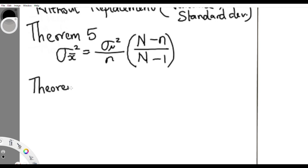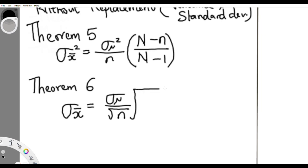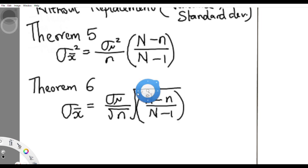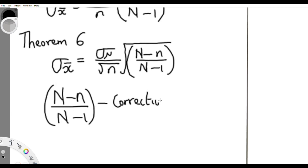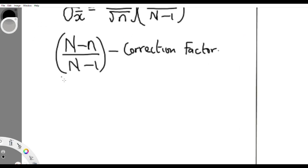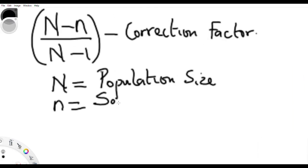The same thing applies for standard deviation. The standard deviation for the sample equals the standard deviation for the population over the square root of n, multiplied by the square root of the correction factor: (N minus n) all over (N minus 1). Here, N is the population size and the small n is the sample size.